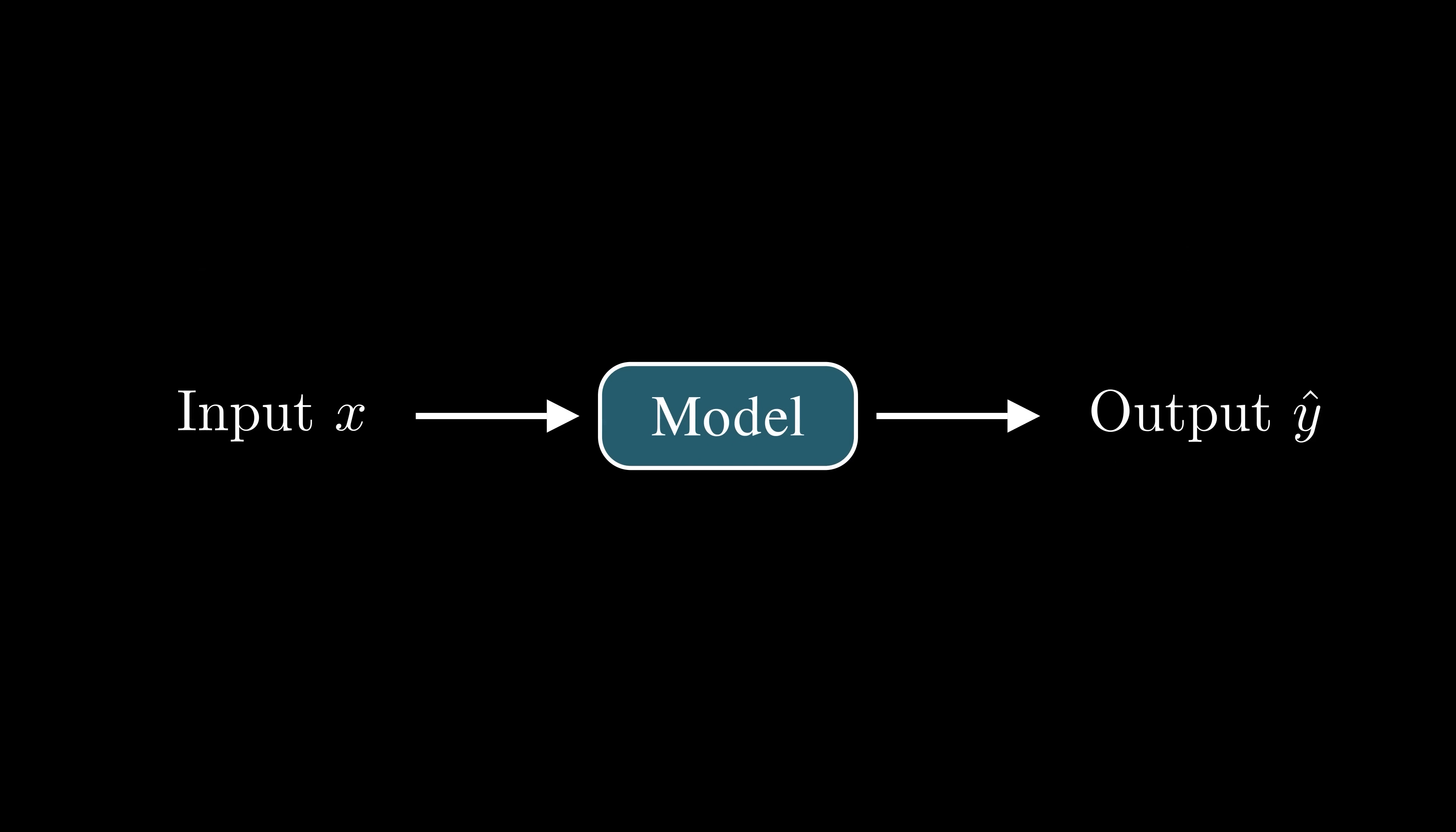To do this, we provide the model with example puzzles and train it to minimize the difference between its predicted solutions and the correct answers. First, we convert the input puzzle into a format that the model can process, typically using an embedding layer.